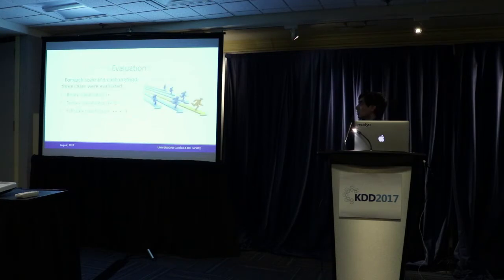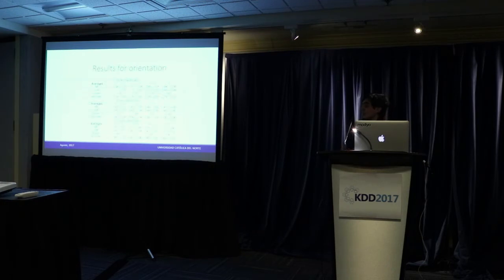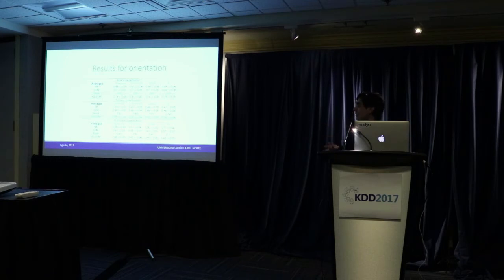For evaluation, for each scale and each method, three cases were evaluated: binary classification omitting neutral cases, ternary classification adding the neutral case, and full-scale classification with five classes. For orientation — the perception of the text — in binary classification the scoring algorithm obtained the best results, and the hybrid method is competitive, surpassing the SVM and Naive Bayes baseline. For ternary classification the hybrid scoring algorithm won, and for full-scale the hybrid algorithm was also superior, though not by a big margin over the regular scoring algorithm.